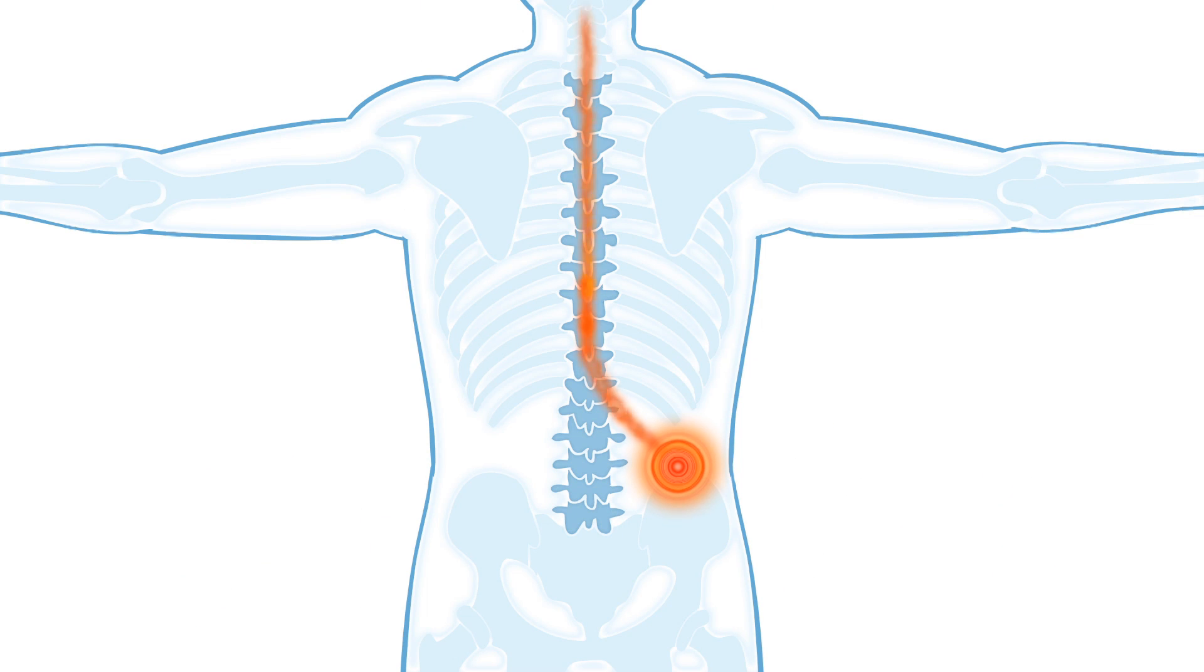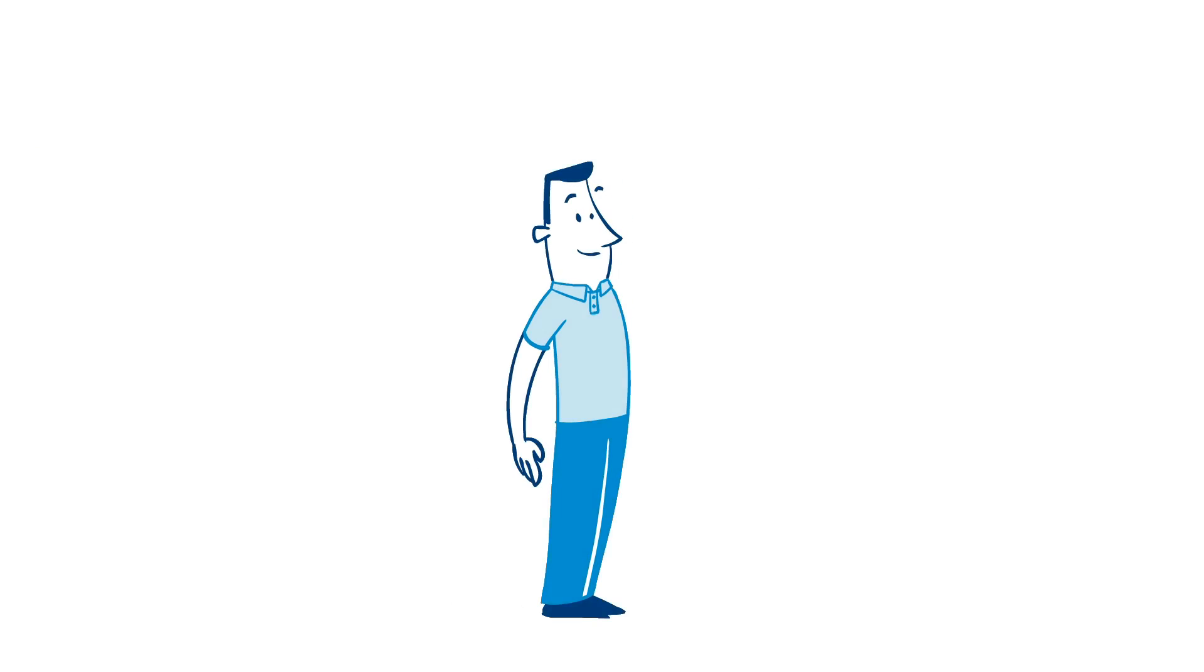Spinal cord stimulation works by implanting a small electronic device under the skin via a small incision. It's connected to leads that stimulate nerves in the spinal column and intercepts pain signals to the brain. The patient will instead feel a tingling sensation. This is called paresthesia.